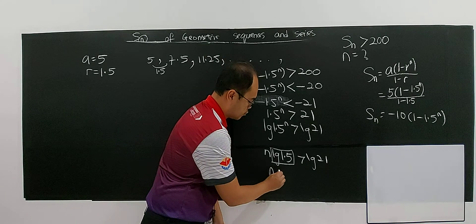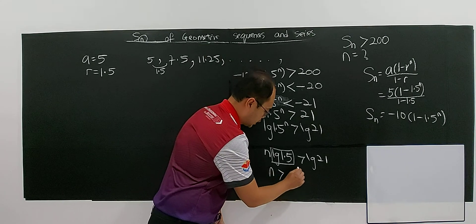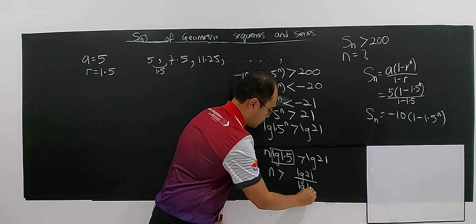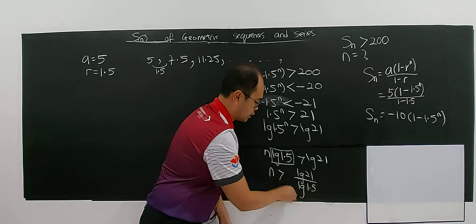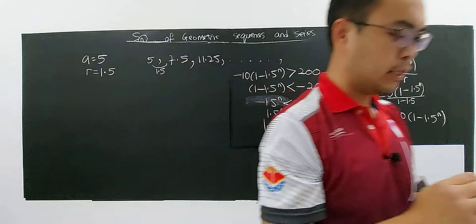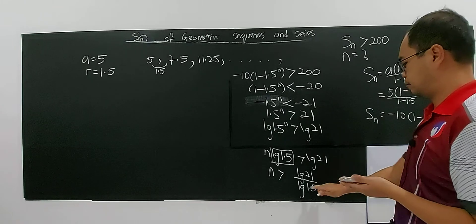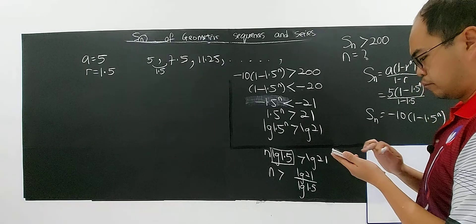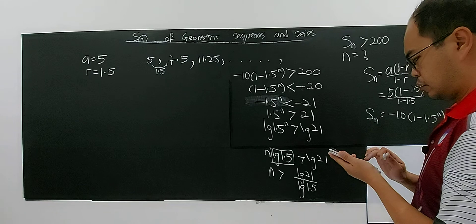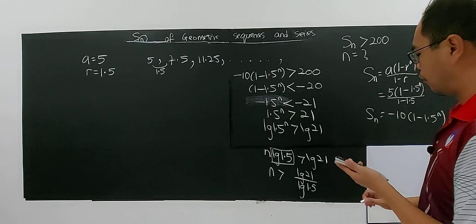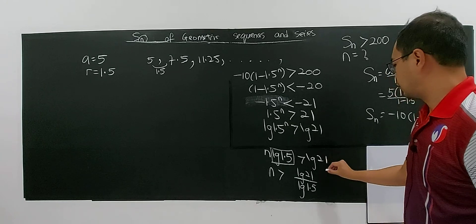So n greater than you take log base 10 of 21 divided by log 1.5 to base 10 and then you will get the value of n here. So you can key in using your calculator. Log 21 divide by log 1.5 base 10, so you have 7.51.